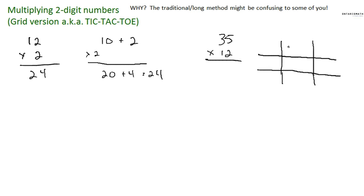Thirty-five we're going to break down — it's actually thirty plus five, just like I practiced over here. And twelve is actually ten plus two. First of all, I'm going to multiply thirty times ten. Here's a trick: there are two zeros — a three-zero and a one-zero. Thirty times ten — I'm automatically going to get two zeros because I see two zeros in thirty and ten. So I write in two zeros, and then all I have to do is multiply three times one, which is three. So thirty times ten equals three hundred.